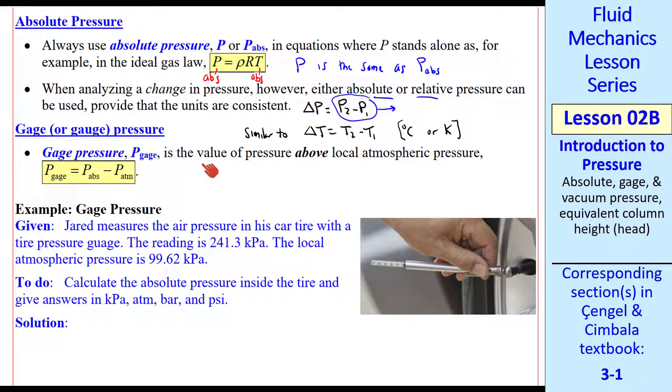Now let's define gauge pressure. It's the value of pressure above local atmospheric pressure. Here's the equation for gauge pressure. From this definition, P gauge is P absolute minus P atmosphere. Keep in mind that this is local atmospheric pressure, which can change with conditions in the atmosphere.